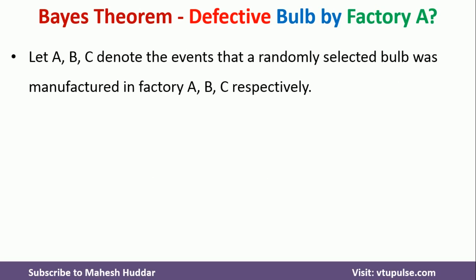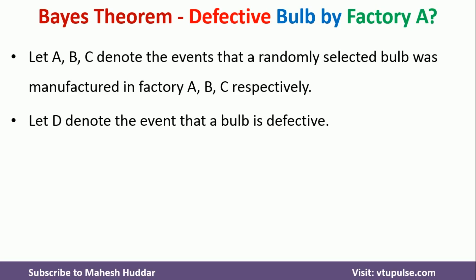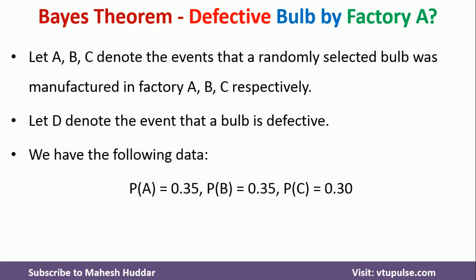We denote the three factories with A, B, and C, and D is used to denote that a bulb is defective. What is given to us: probability of A is 0.35, probability of B is 0.35, and probability of C is 0.30 — meaning 35% of bulbs are produced at A, 35% at B, and 30% at C.